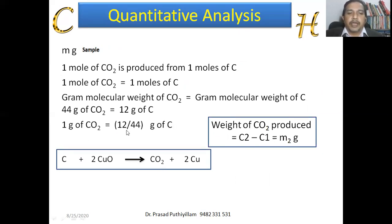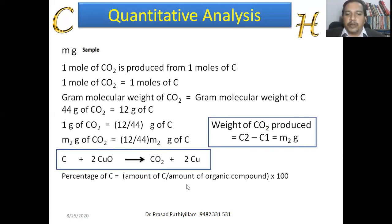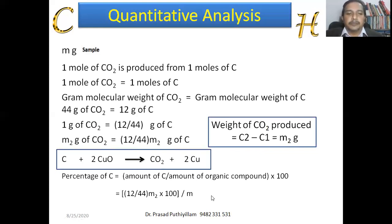Therefore, 1 gram of carbon dioxide contains 12/44 grams of carbon. The obtained M₂ grams of carbon dioxide will produce (12/44) × M₂ grams of carbon. The percentage of carbon = (amount of carbon / amount of organic compound) × 100, which is (12/44 × M₂) / M × 100, rewritten as 12M₂ / 44M × 100.